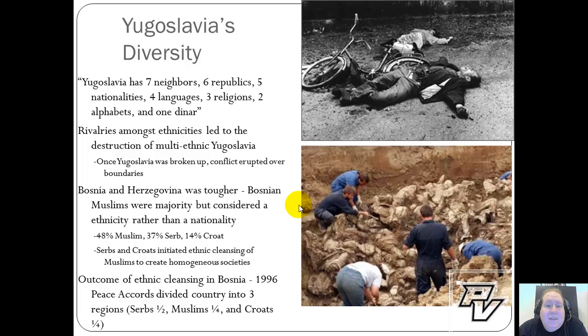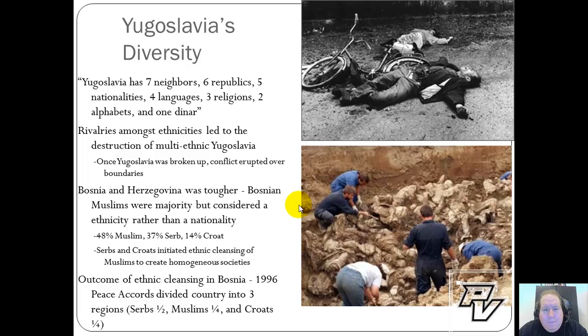There's a phrase about Yugoslavia: Yugoslavia has seven neighbors, six republics, five nationalities, four languages, three religions, two alphabets, and one dinar. The level of diversity in Yugoslavia is so extreme that it opens the door to more potentially damaging conflict. What really led to the destruction of the multi-ethnic Yugoslavia that existed throughout most of the Cold War were rivalries that began amongst ethnicities. As soon as Yugoslavia broke up, conflict erupted between all the groups over where the boundaries should lie.